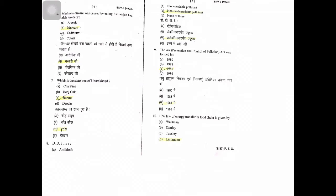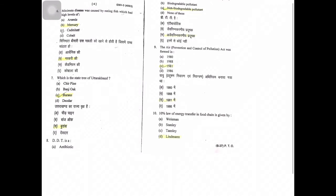Fish is the state tree of Drachan. PVC is a non-biodegradable pollutant. The Air Prevention and Control of Pollution Act was formed in 1981. 10% law of energy transfer in food chain is given by Lindeman.